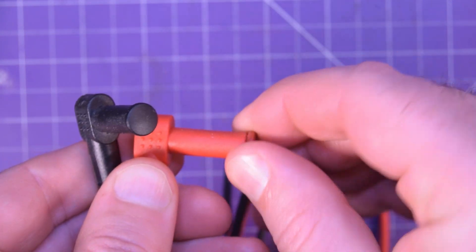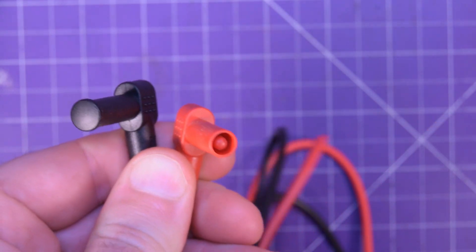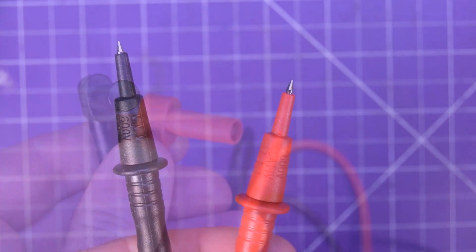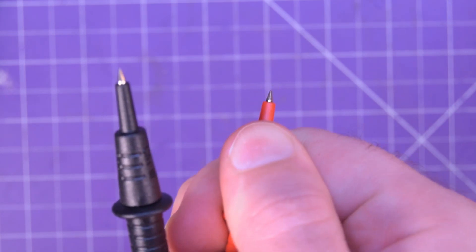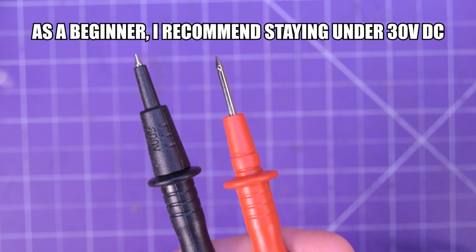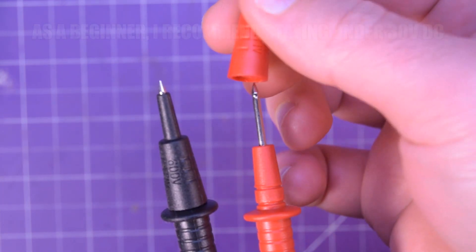The leads themselves sometimes have dust covers on both ends which you're going to need to remove to take measurements and sometimes at the probing end there'll be a little cap that is needed for high voltage safety but as a beginner you should not be working with high voltage anyways so you can either leave it on or remove it.